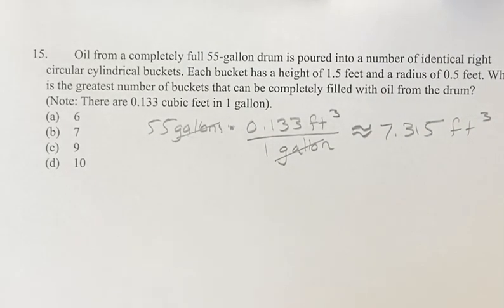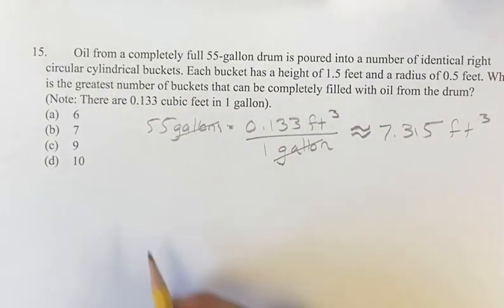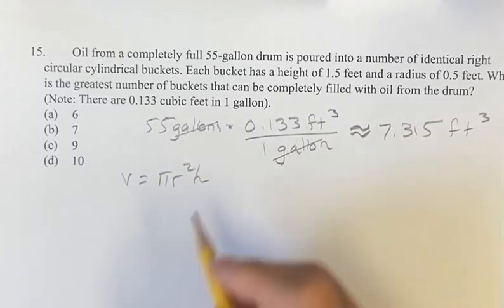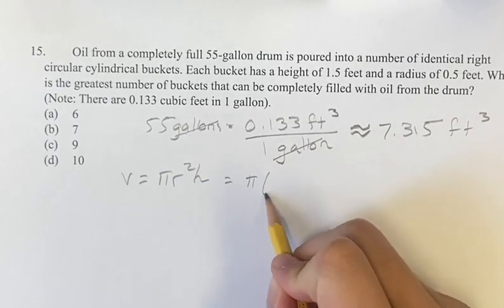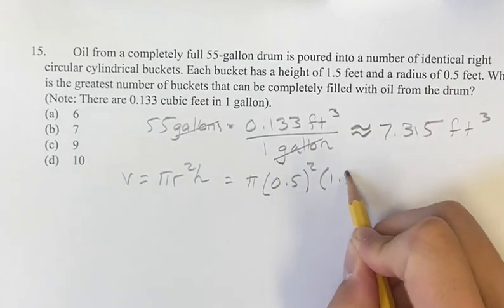Now, how many feet cubed is a bucket? Well, we know the buckets are cylindrical, so the volume of each bucket is pi r squared h, which equals pi times the radius 0.5 squared times 1.5.